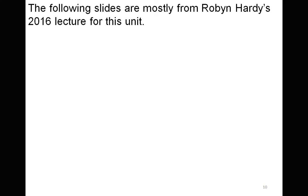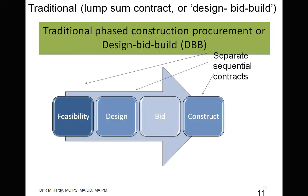Most of the following slides come from Robin Hardy's 2016 lecture for this unit. The first procurement system is the traditional method, also known as a lump sum contract or design-bid-build system. The process is: you design the project with your client until the design is acceptable, then you put it out for tender or costing — the bid part — where builders will bid on your designs through your documents. Based on that, you engage the builder to construct the project.